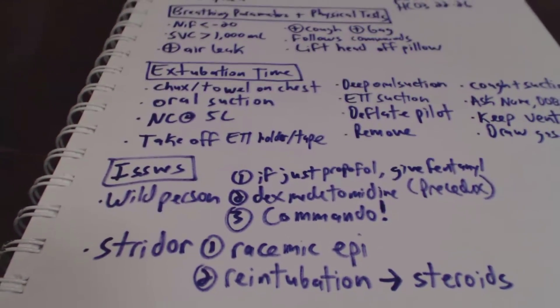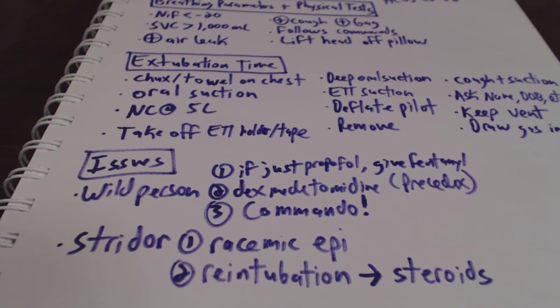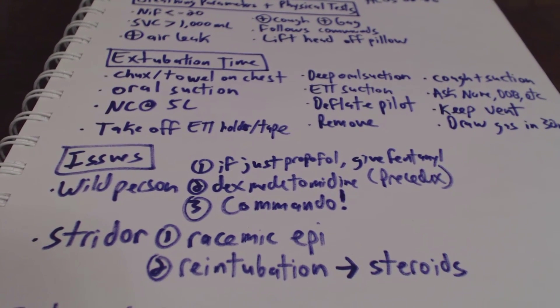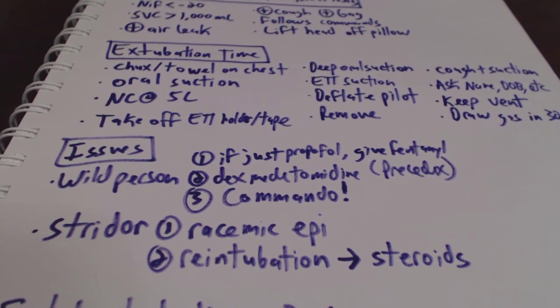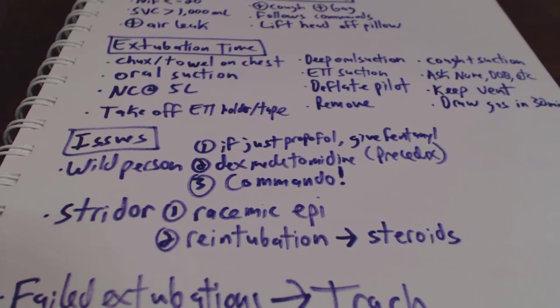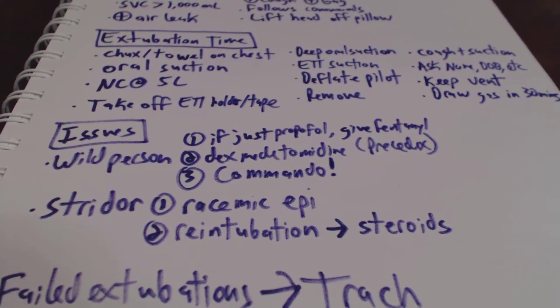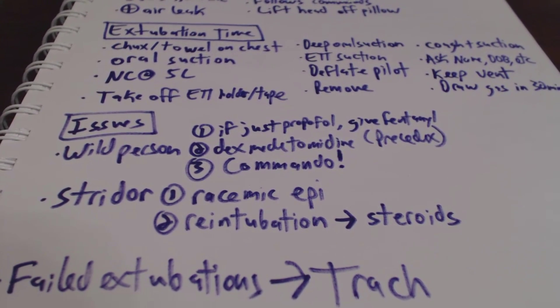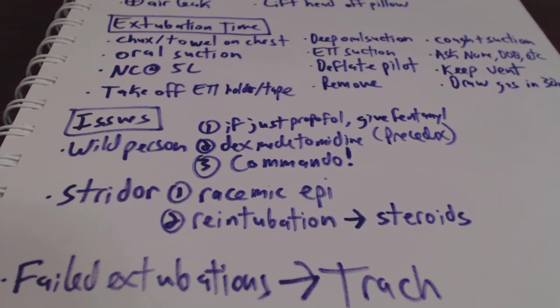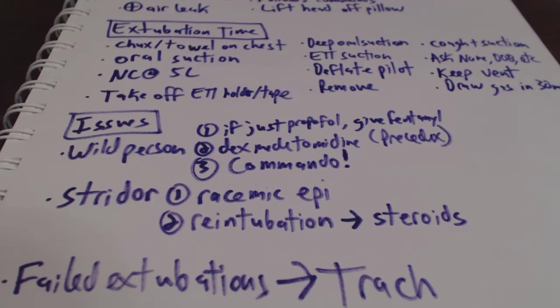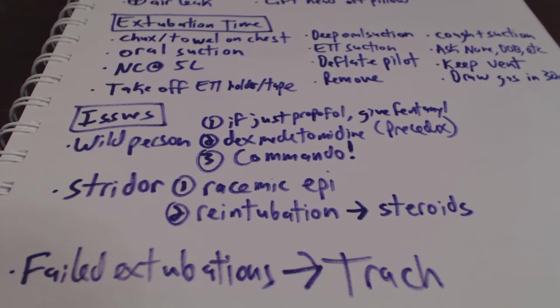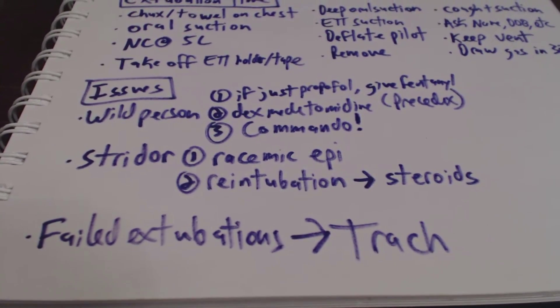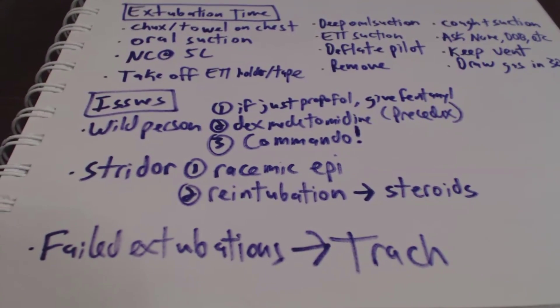The issues that we can run into is that we have a patient who's a wild person. If they're just on propofol, we'll give them a little bit of fentanyl. And if that doesn't work, we'll do the dexmedetomidine. After that, we'll commando extubate. And if the patient has stridor, so just that horrible sounding breathing, racemic epinephrine if we have time, and then immediate re-intubation and then also steroids to help with the inflammation there. And then if it gets really bad, an emergent cricothyroidotomy is something that we can also do. And with multiple failed extubations, eventually a trach is in the future for that patient.